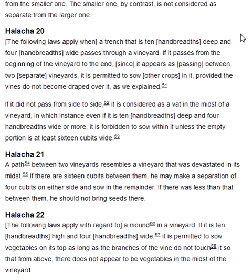Halakha 20. The following laws apply when a trench that is ten handbreadths deep and four handbreadths wide passes through a vineyard. If it passes from the beginning of the vineyard to the end, since it appears as passing between two separate vineyards, it is permitted to sow other crops in it, provided the vines do not become draped over it. If it did not pass from side to side, it is considered as a vat in the midst of a vineyard, in which instance, even if it is ten handbreadths deep and four handbreadths wide or more, it is forbidden to sow within it unless the empty portion is at least sixteen cubits wide.